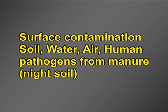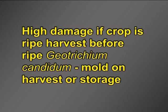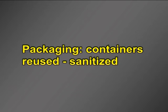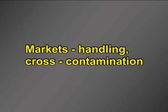Sources of contamination include surface contamination by soil, water, air, and human pathogens from manure (night soil). Harvesting — whether by hand picking versus machines — can cause high damage if the crop is ripe; it is better to harvest before ripe. Geotrichum candidum is a mold found on harvest or in storage. Packaging containers should be reused only if sanitized. Cross-contamination can occur at processing plants and markets during handling. The microflora of vegetables will generally reflect the sanitation of processing steps as well as the condition of the original raw product.